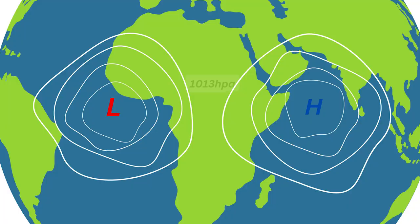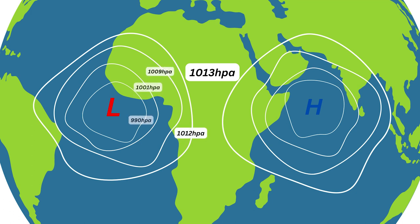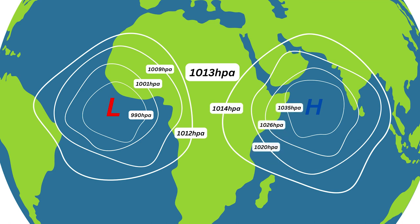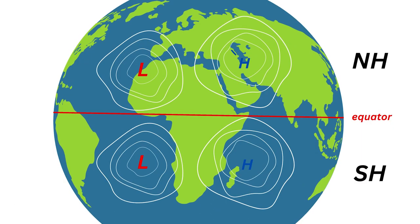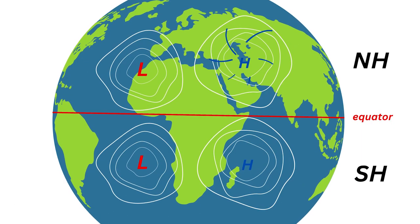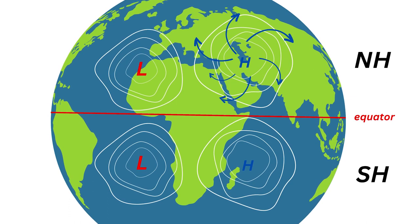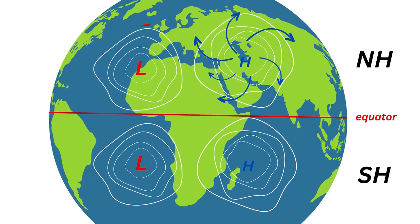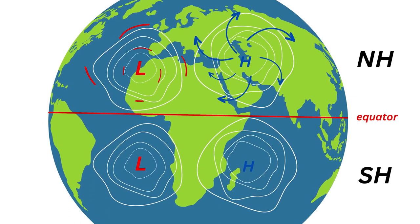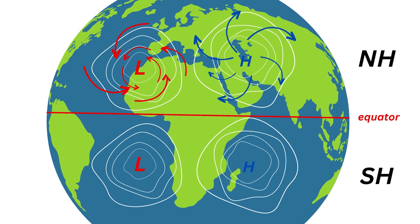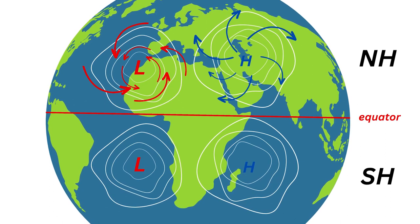High and low pressure meet at 1013 hPa. So 1012 hPa and everything below is a low pressure system, and 1014 hPa and everything above is a high pressure system. In the northern hemisphere, high pressure turns clockwise and low pressure counterclockwise. In the southern hemisphere, the opposite happens.